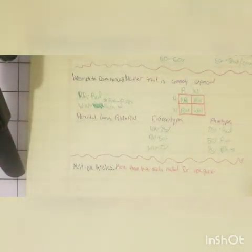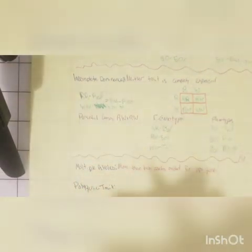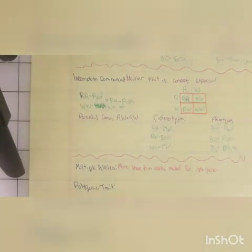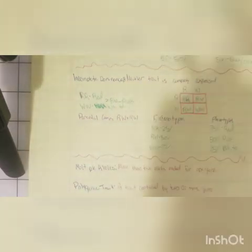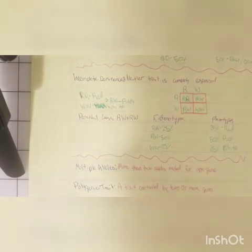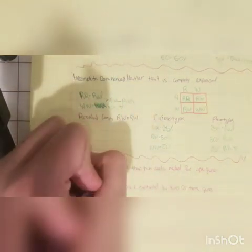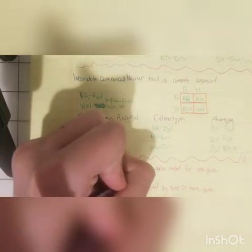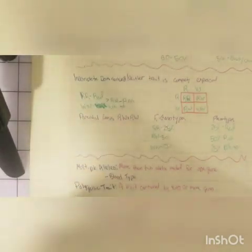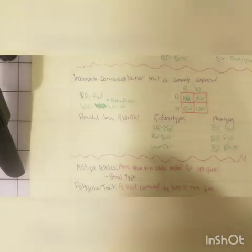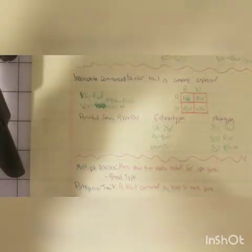Going further, a polygenic trait is a trait controlled by two or more genes. A good example of multiple alleles is blood type — you have A positive, A negative, B positive, B negative, O positive, O negative, and more.